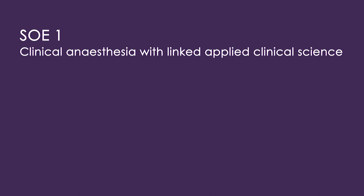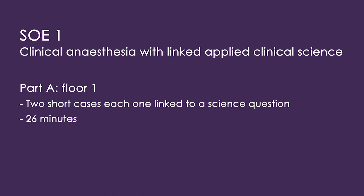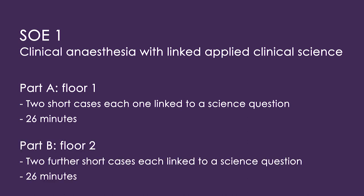Your first exam SOE1 is conducted in two parts: Part A, which is carried out on floor 1, and Part B, which is conducted on floor 2. Each part consists of two clinical short cases and two science questions in 26 minutes. The sequence is normally a clinical short case followed by a science question, then a further clinical short case again followed by the science question it's linked to, but sometimes the linked science question may be covered before the clinical short case. It doesn't matter whether you sit Part A or Part B first, as the examinations team will make sure you're in the right place at the right time.